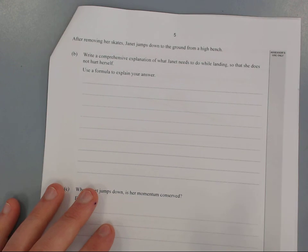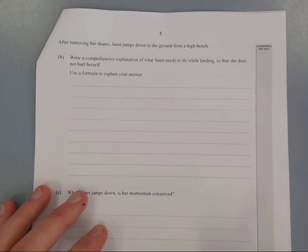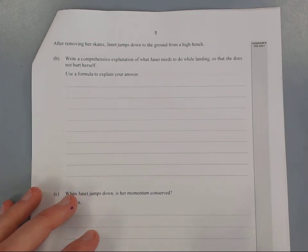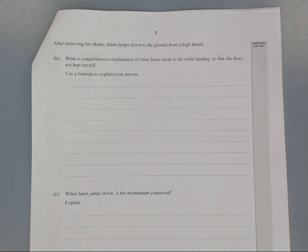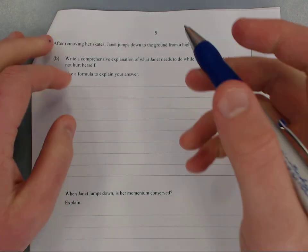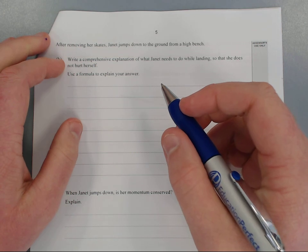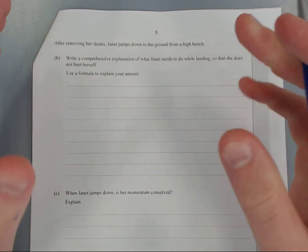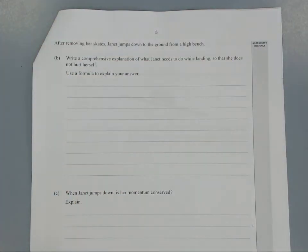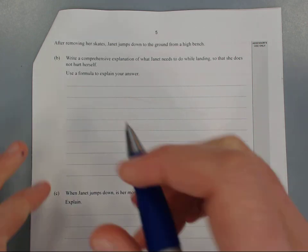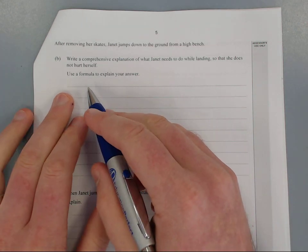Question B: After removing her skates, Janet jumps down to the ground from a high bench. Write a comprehensive explanation of what Janet needs to do while landing so she does not hurt herself. Either way, her change in momentum is going to be the same because she's going to gain momentum as she falls and needs to stop.